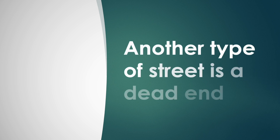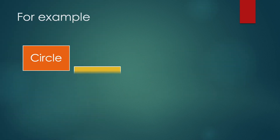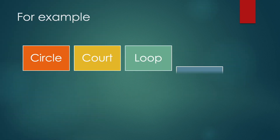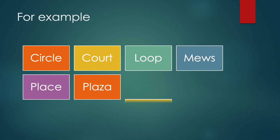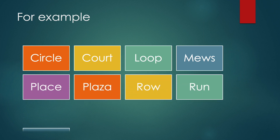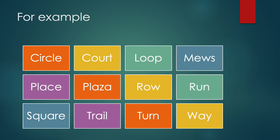Another type of street is a dead end. For example: circle, court, loop, muse, place, plaza, row, run, square, trail, and turnway.